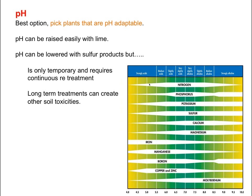On pH: I often hear that we have too high a pH so we should lower it by adding sulfur products. The reality is you can't lower pH over the long term with sulfur — you have to keep adding it every year, and it's difficult to do, especially in urban sites where you might not be able to incorporate the sulfur into the ground. It's difficult to imagine a long-term sulfur treatment program that would be successful. Again, pick plants that are pH-adaptable to the pH you actually have.